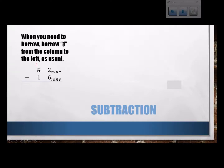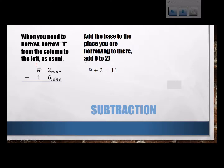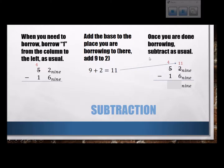For subtraction, whenever you need to borrow, you borrow 1 just like normal. So here I borrowed a 1 from this 5 to make it a 4. Then you want to add the base to the place you are borrowing to. So I was borrowing to the 2's place. I'm in base 9, so 9 plus 2 is 11. So I put my 11 there. And once you're done borrowing, you can just subtract as usual. 11 minus 6 is 5, 4 minus 1 is 3.